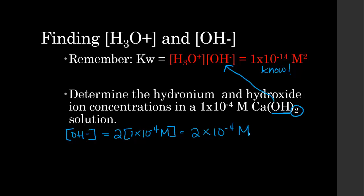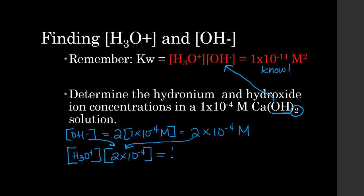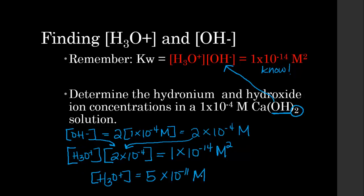Now how do we find the hydronium ion concentration? We plug into the Kw equation: [H₃O⁺] times [OH⁻] equals 1×10⁻¹⁴. Substituting [OH⁻] = 2×10⁻⁴, we divide 1×10⁻¹⁴ by 2×10⁻⁴, and the hydronium ion concentration comes out to be 5×10⁻¹¹ molar.